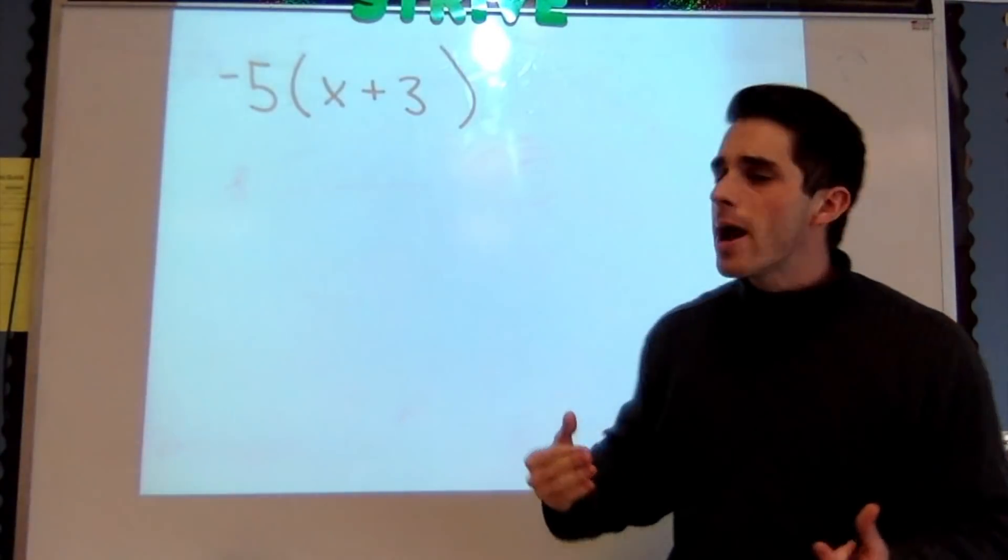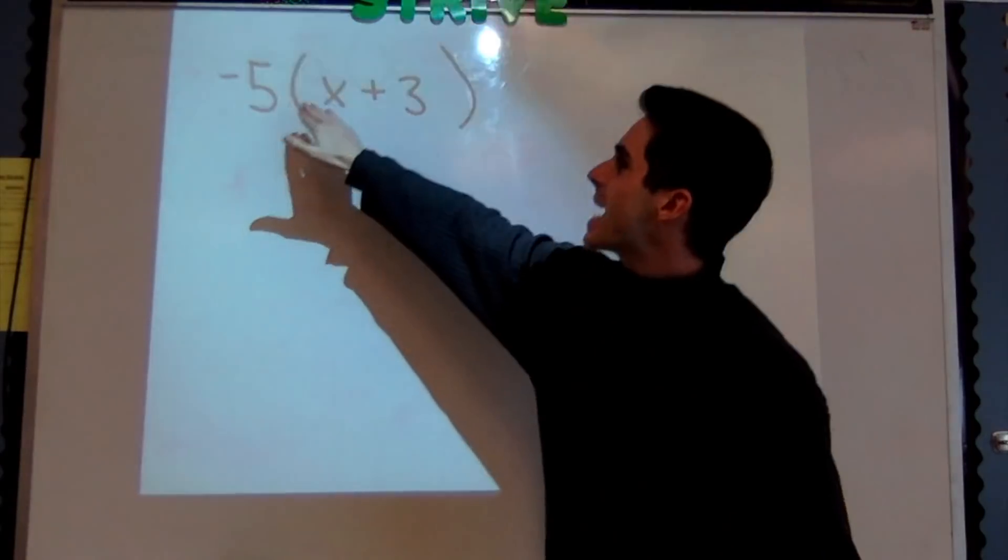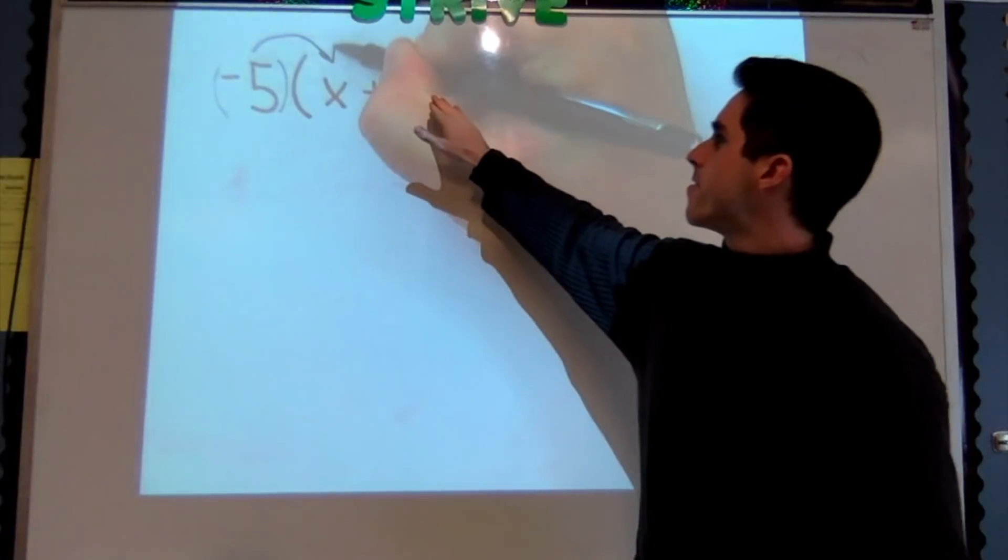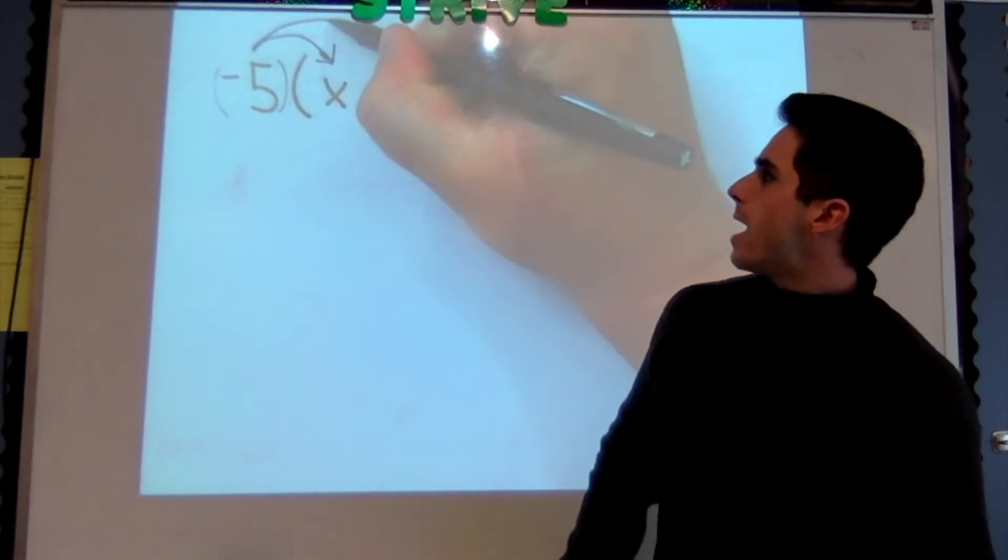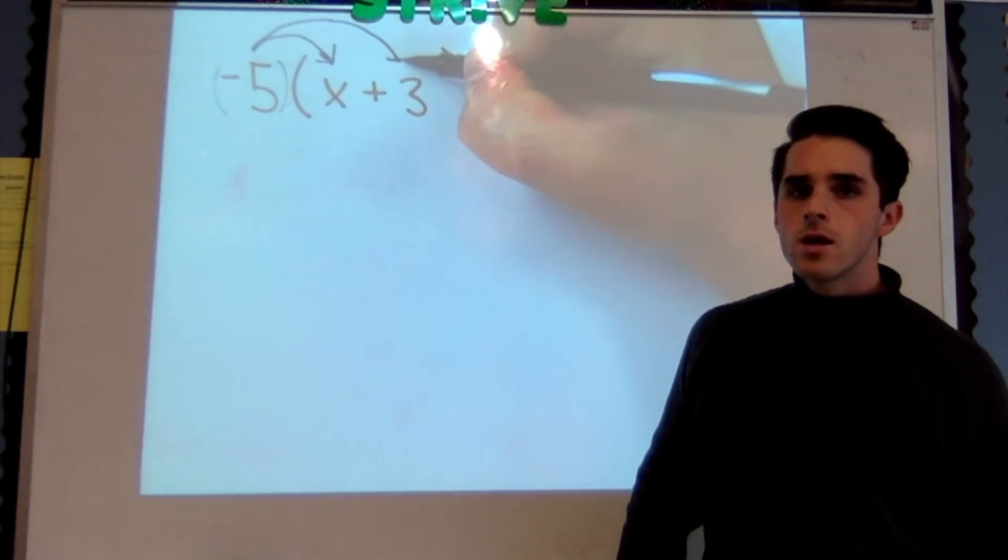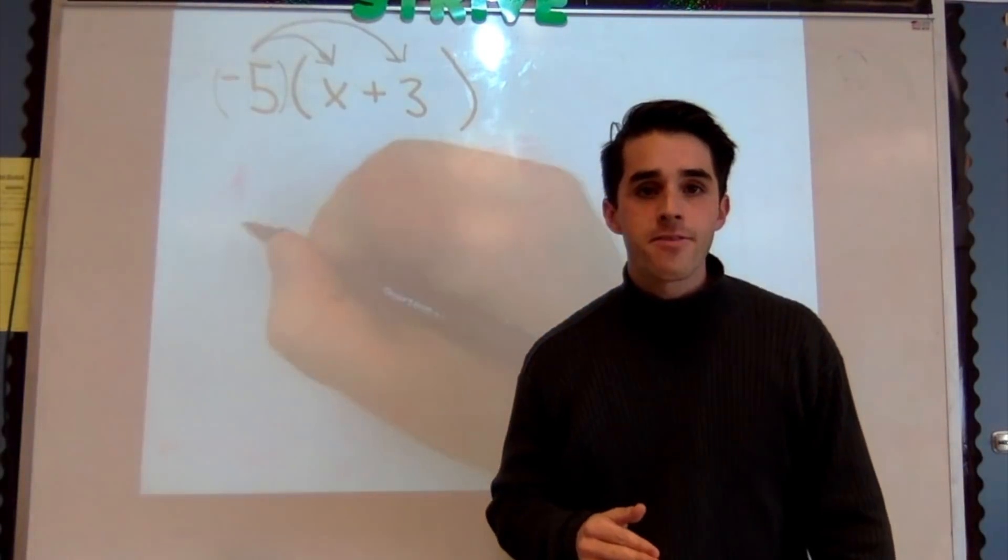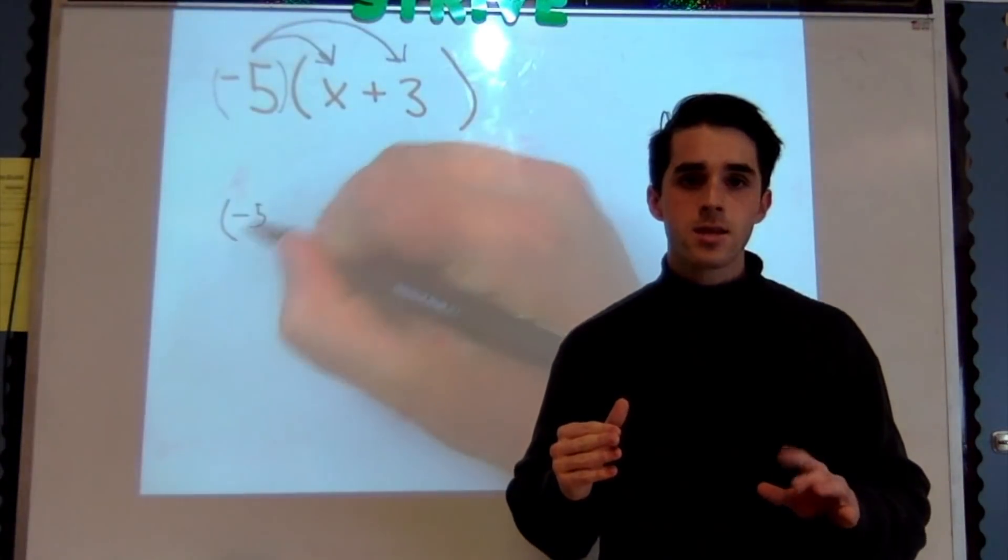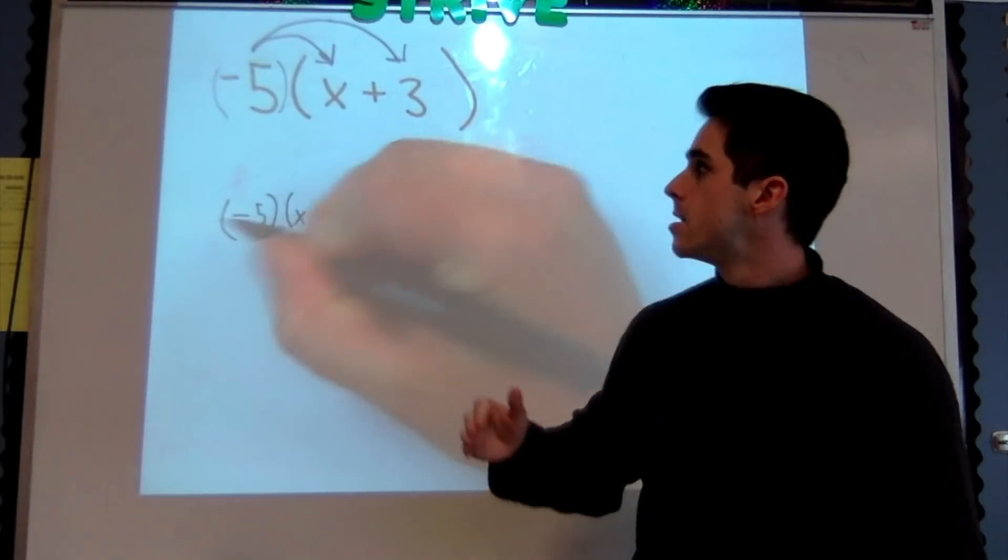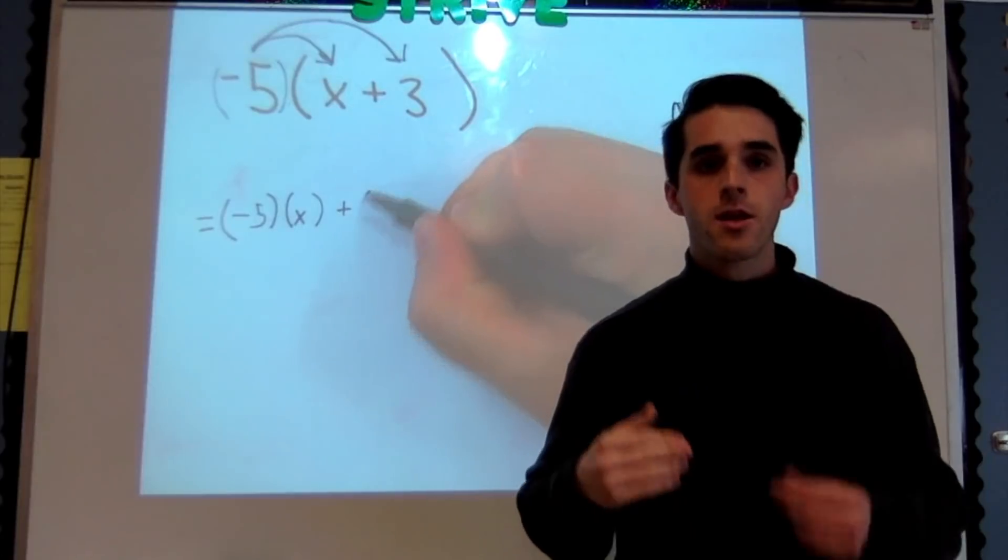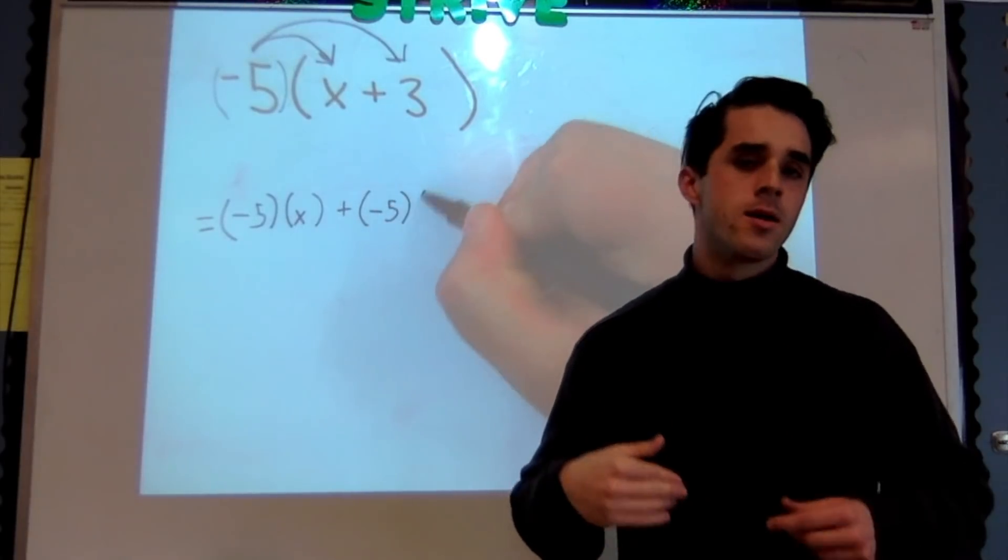I'm gonna distribute my -5 to the x and my -5 over to the positive 3. I'm gonna rewrite this now as (-5)(x) + (-5)(3).